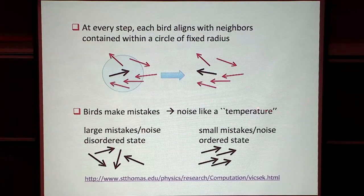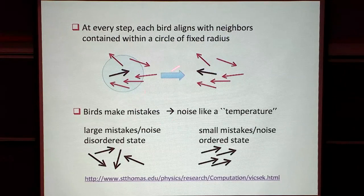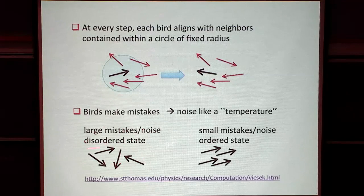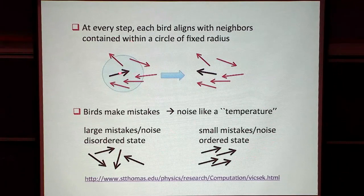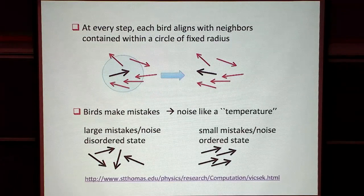If you write down equations for this model and integrate them on a computer, you find that it exhibits a phase transition as a function of noise strength. If the noise is large, the birds make many mistakes and are in a disordered state — flying in all directions, like an unmagnetized spin system. But when the noise is small enough, they actually form a flock. This happens at a well-defined value of the noise, just like the transition from a disordered to a ferromagnetic system happens at a precise temperature.